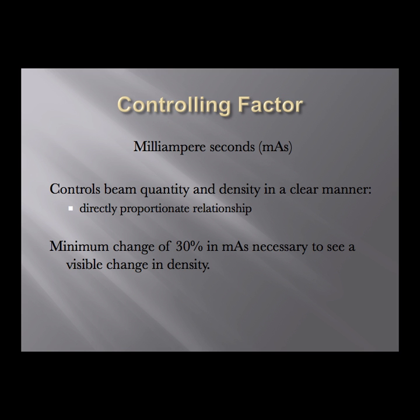mAs controls beam quantity, all leading back to the process of thermionic emission and the quantity of electrons boiled off at the cathode, which in turn control the quantity of x-ray photons produced at the anode. As mAs goes up, we're heating the filament to a higher degree, boiling off more electrons, and they in turn are converted into more x-ray photons. This is a pretty directly proportionate relationship, though your textbook notes it's not exactly doubling or halving.